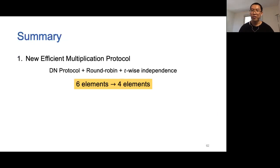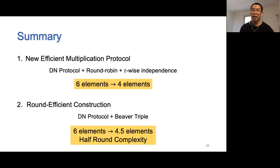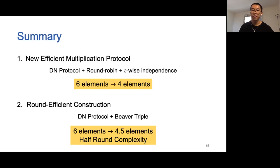In summary, in this work we construct a new efficient multiplication protocol that achieves communication complexity of 4 elements per multiplication gate per party. Our idea is to use the DM protocol, play the role of the first party in a round-robin way, and rely on t-wise independence. We then improve the round complexity to achieve better concrete efficiency by carefully combining the idea of Beaver triples with the original DM protocol. As a result, we can evaluate a two-layer circuit in parallel, constructing a round-efficient protocol with 4.5 elements per multiplication gate per party and round complexity reduced by a factor of two. Altogether, our protocol ATLAS is the fastest MPC protocol in the honest-majority setting. Thank you.